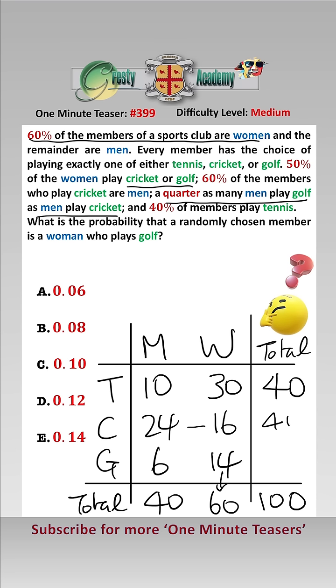Just adding all of these up, 24 add 16 is 40. 6 add 14 is 20. 40 add 40 add 20 gives 100. 40 add 60 gives 100.